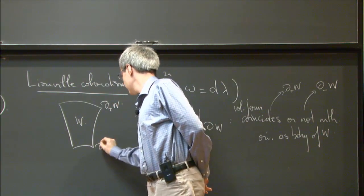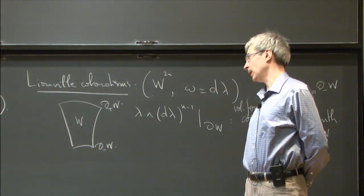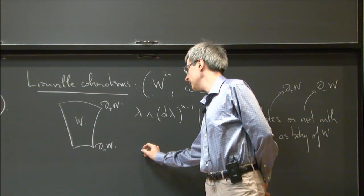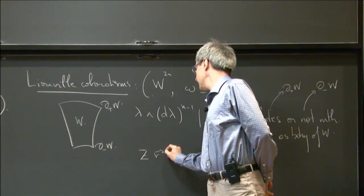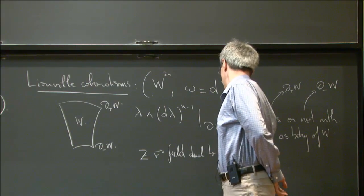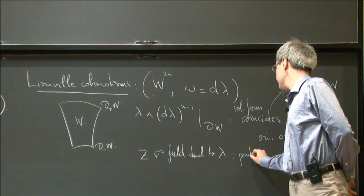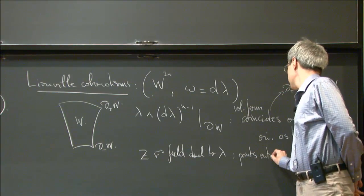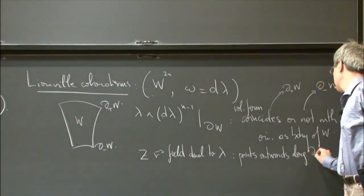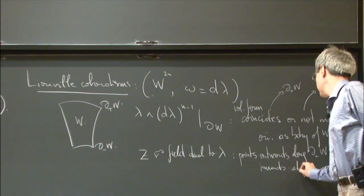Alternatively, as you very well know, you can define these in a more geometric manner by saying that you have a vector field which is dual to the primitive, and this vector field points outwards along the positive boundary and inwards along the negative boundary.